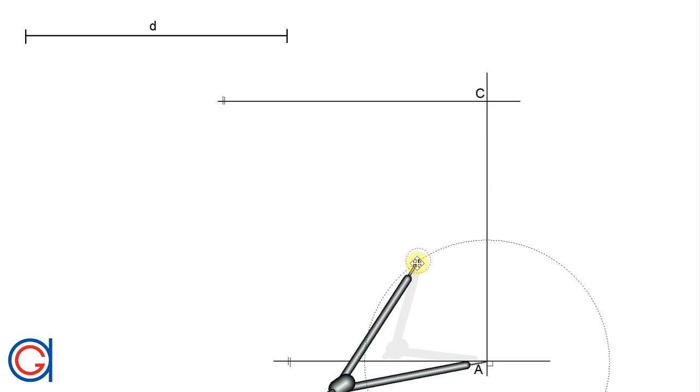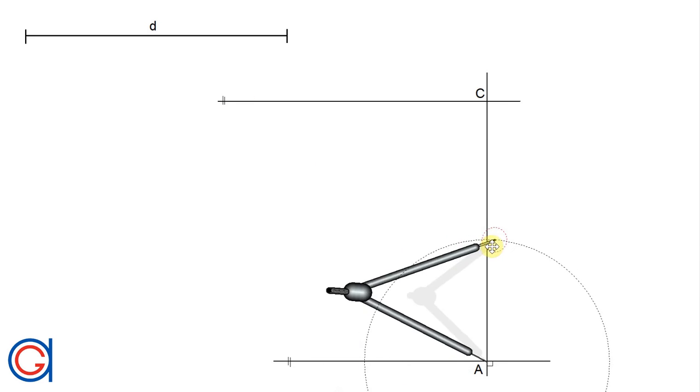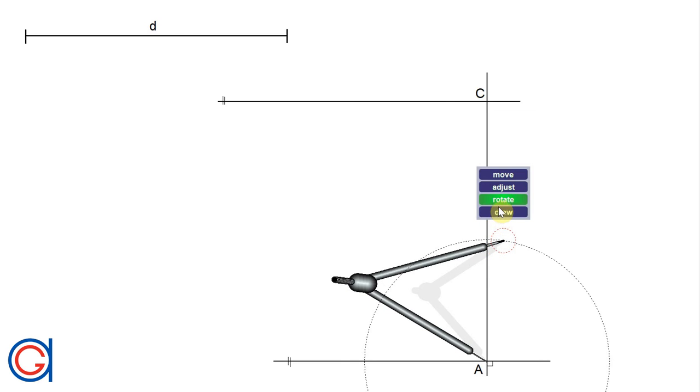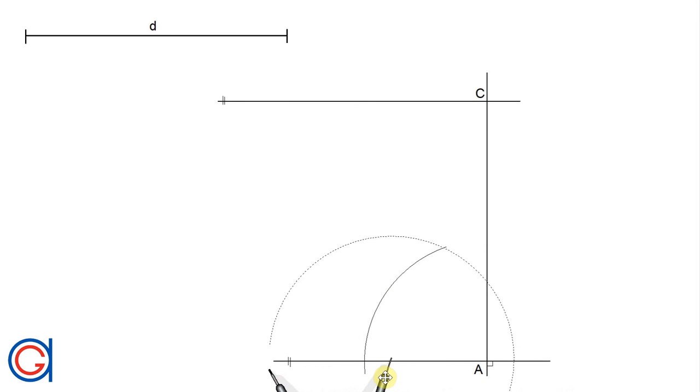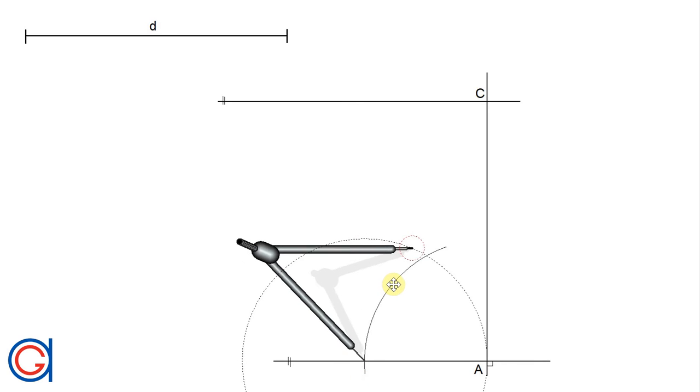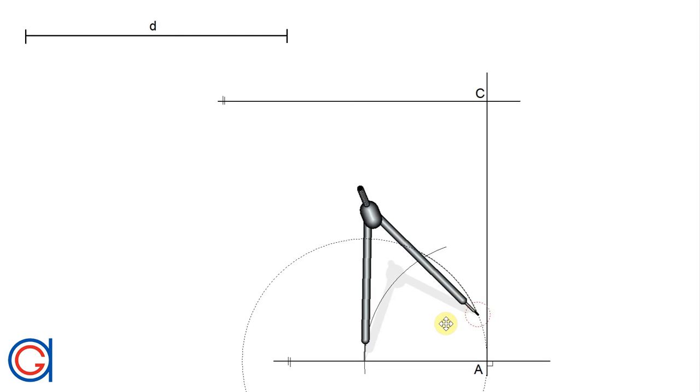Now setting our compass to a smaller radius, any random radius, and setting the compass on A, we scribe an arc on the vertical line. We get two new points on the A line, and now setting our compass on the previously scribed arc, we draw a second arc which finishes at point A.